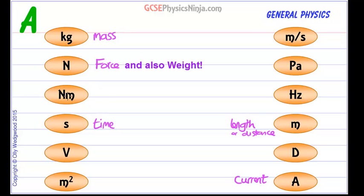Then we've got newton meters, this is a strange unit which is a quantity called a moment or turning force. It measures how much turning force there is due to a force about a pivot.